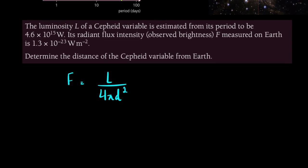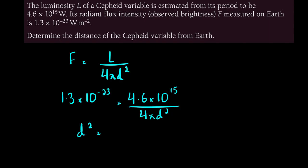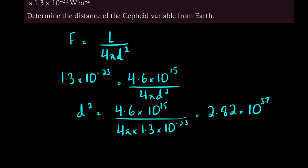Let's check the units: this is in watts, this is in watts per meter squared - pretty much standard units. So F is 1.3×10⁻²³, L is 4.6×10¹⁵, and you have 4πd² here. If you want to find d, the distance, d² would be 4.6×10¹⁵/(4π × 1.3×10⁻²³). Just plug these numbers into your calculator, and d² turns out to be 2.82×10³⁷.